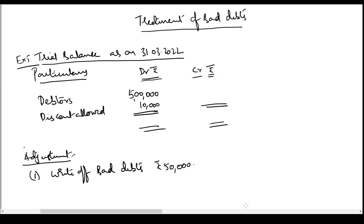Welcome to the next video on final accounts. We have an illustration on treatment of bad debts. Here you are given an extract of a trial balance as on 31st March 2022. Particulars: debit rupees — debtors 5 lakh rupees, discount allowed 10,000. It's not a complete trial balance but a small portion, so in your ledger you have a debtor account with 5 lakh balance and a discount allowed account with 10,000 balance.